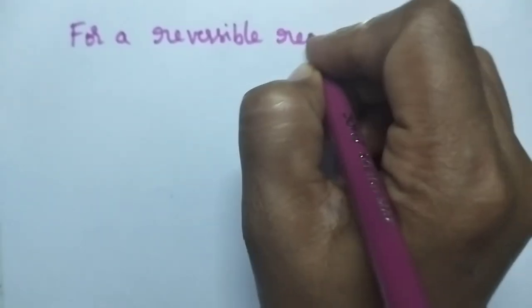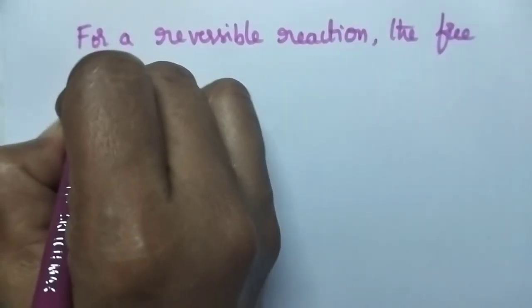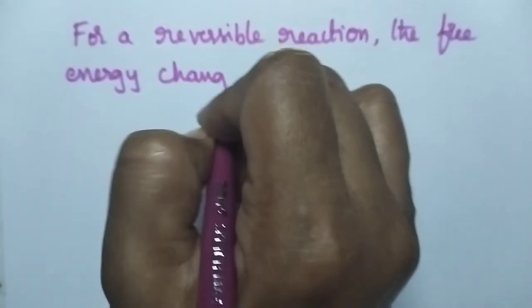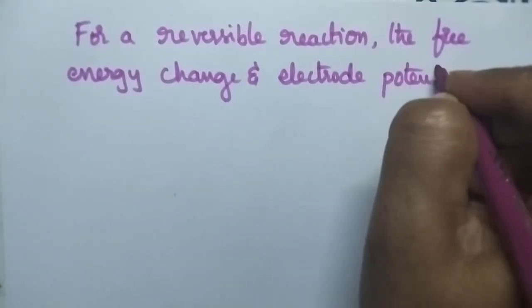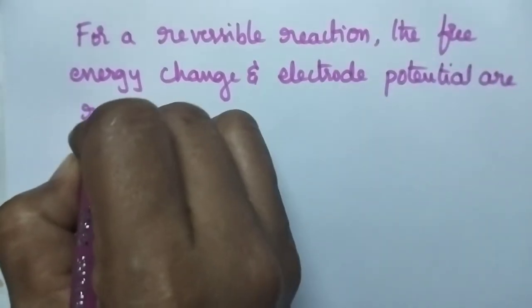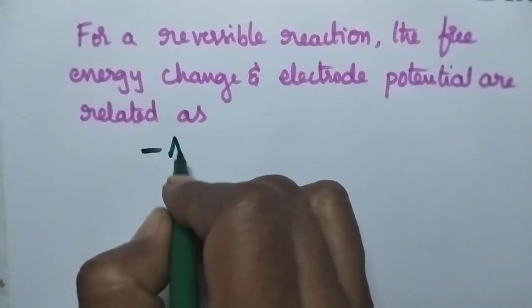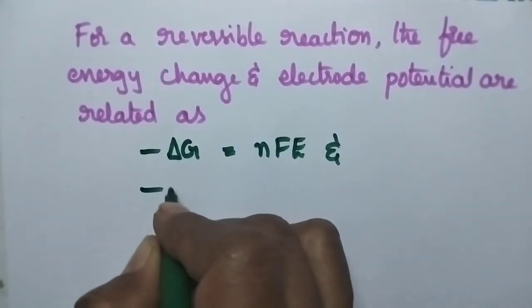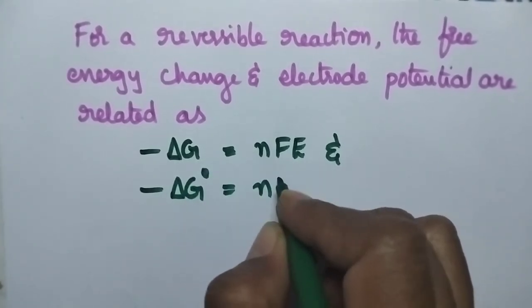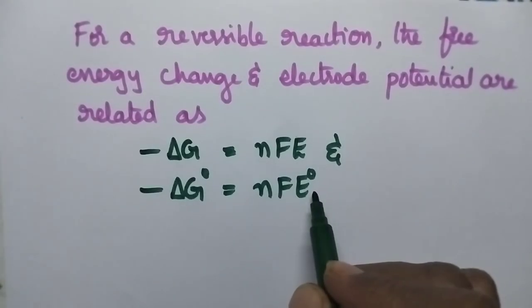For a reversible reaction, the free energy change and electrode potential are related as: −ΔG = NFE and −ΔG° = NFE°, where E is the electrode potential and E° is the standard electrode potential.